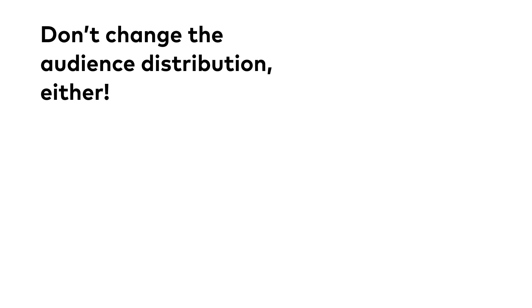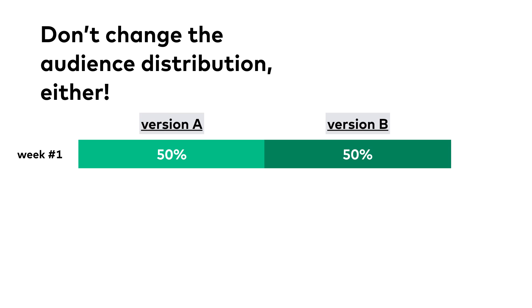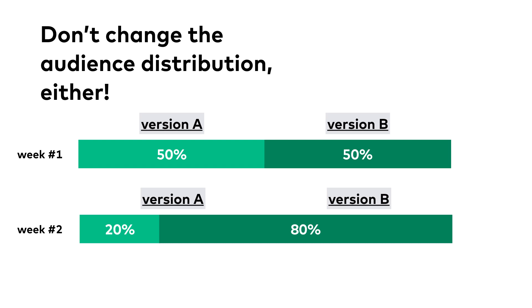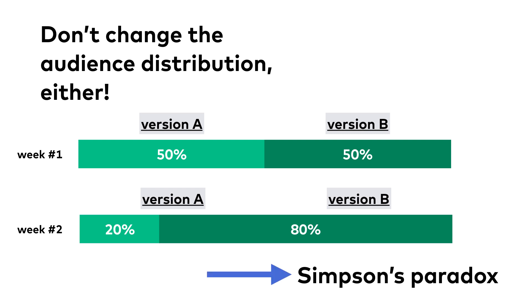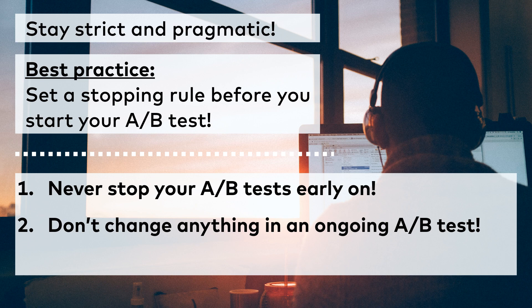It's also crucial not to change the audience distribution. I see people doing this often. Version B seems to be winning, so they change the distribution of the experiment from 50-50 to a 20-80 split. They say the more people see version B, the more people will convert — right? But again, it will completely mess up your A-B test results. Besides the obvious statistical significance issue, you will have to deal with another statistical problem called Simpson's paradox. I've added a detailed article about it below this video. The general rule is: do not change anything in an ongoing A-B test — neither the design nor the audience distribution. Otherwise, you will get fake results.